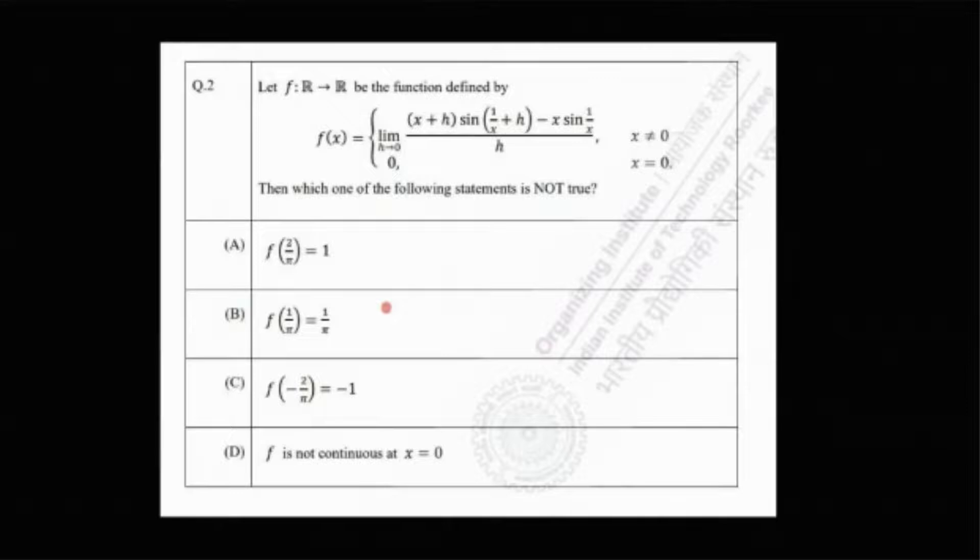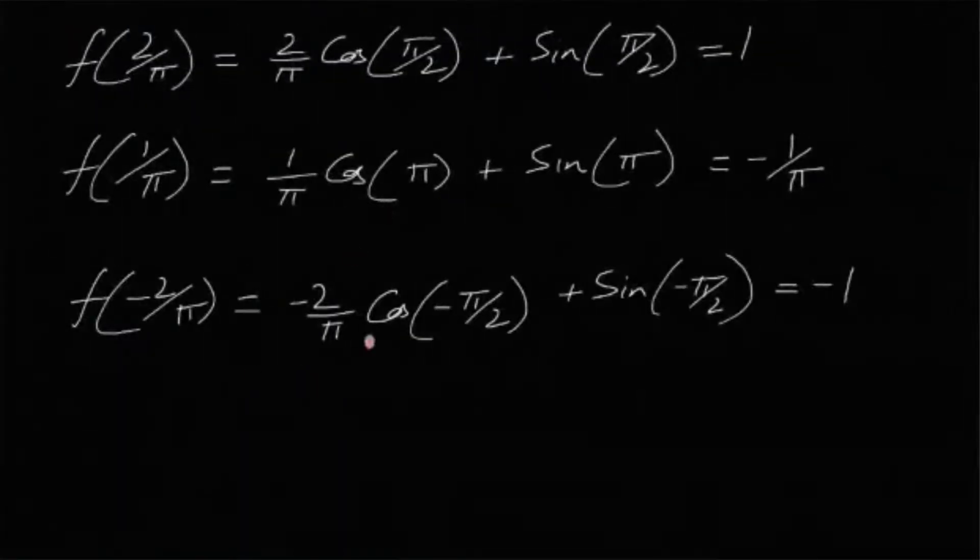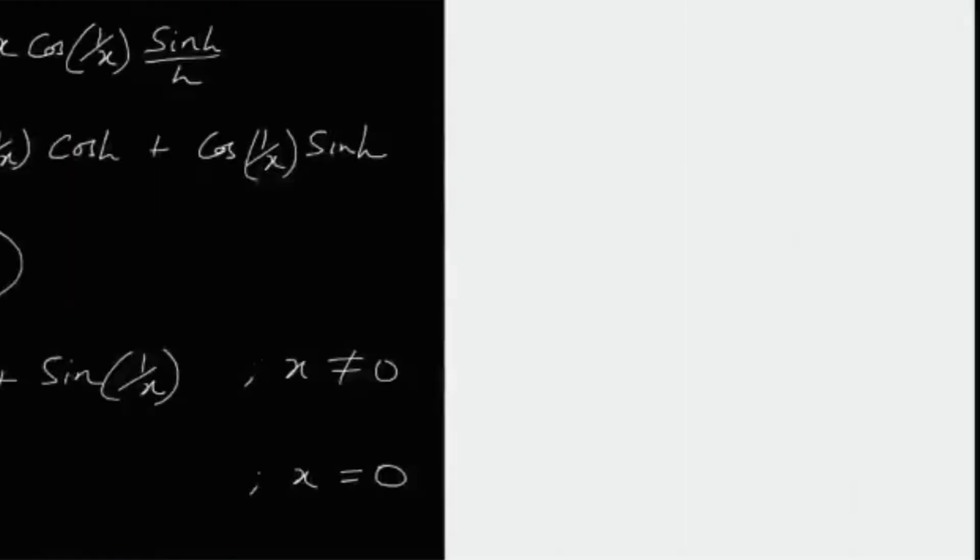But just to be very rigorous in the entire solving, let us prove that the other options C and D are also true. So f(-2/π) actually turns out to be -1, here it is given f(-2/π) is -1, you can easily find out. Lastly, the function f is not continuous at x equals 0.